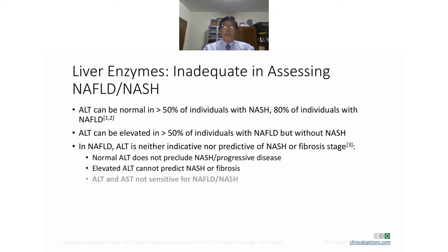ALT can be normal in more than 50% of individuals with NASH and 80% of individuals with NAFLD. So liver enzyme assessment is not good for assessing NAFLD or NASH. ALT can be elevated in more than 50% of individuals with NAFLD but without NASH. In NAFLD, ALT is neither indicative nor predictive of NASH or fibrosis stage. Normal ALT does not exclude NASH or progressive disease, and elevated ALT cannot predict NASH or fibrosis. ALT and AST are not sensitive markers for NAFLD and NASH.